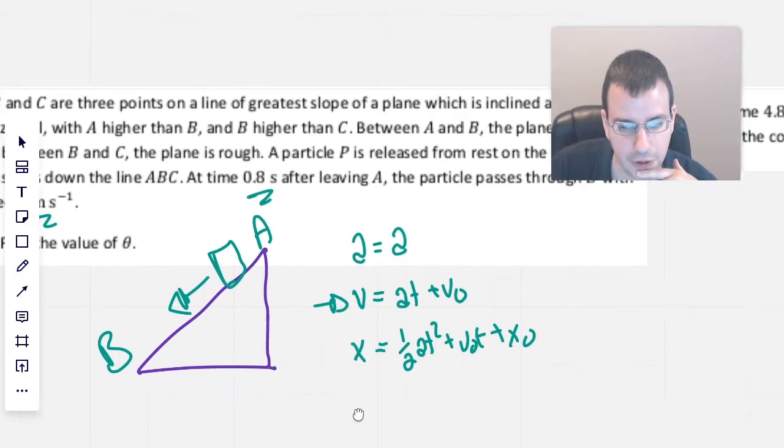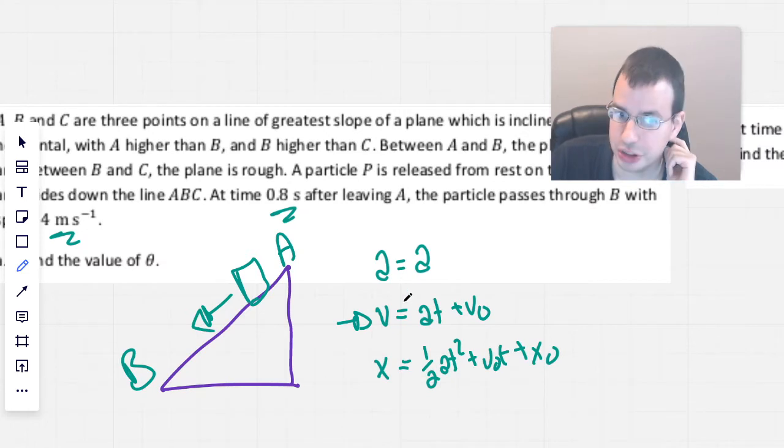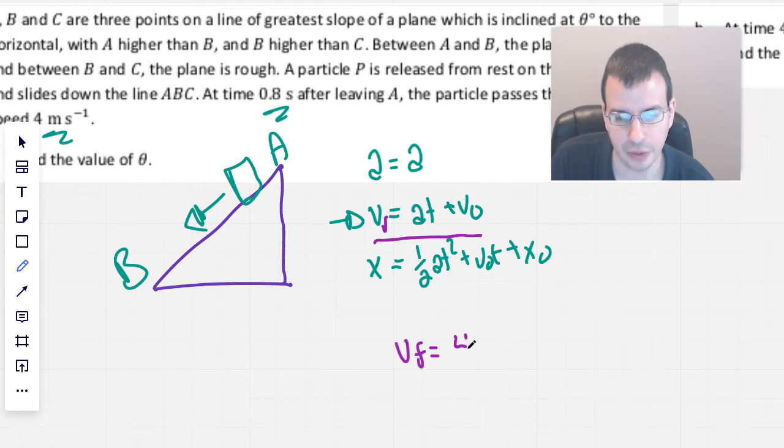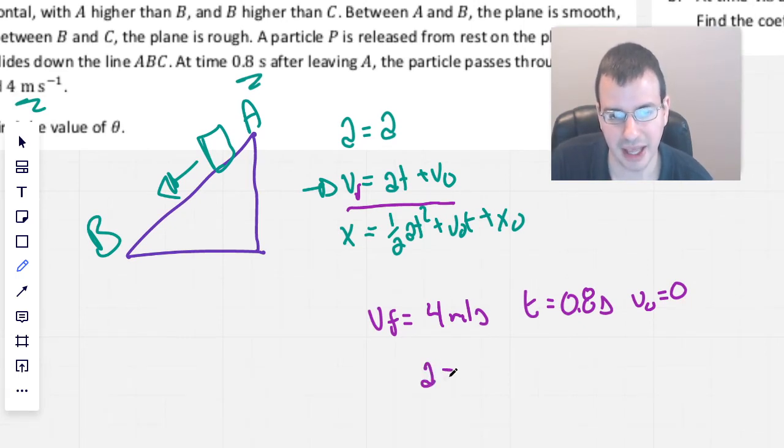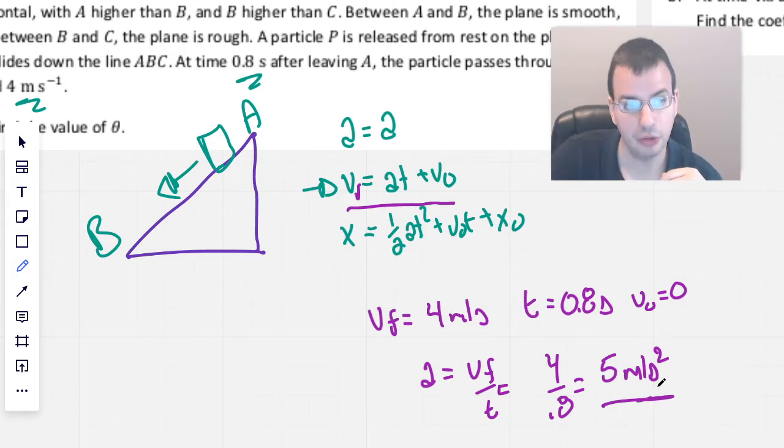This is the equation I think we're going to use here. We want to find the acceleration. Using this equation, V final equals At plus V initial. V final they give us is 4 meters per second. Time is 0.8 seconds. It starts from rest, so V initial is zero. Rearranging for A, we get A equals V final over time, which is 4 divided by 0.8, which will be 5. So 5 meters per second squared will be the acceleration of the box coming down.